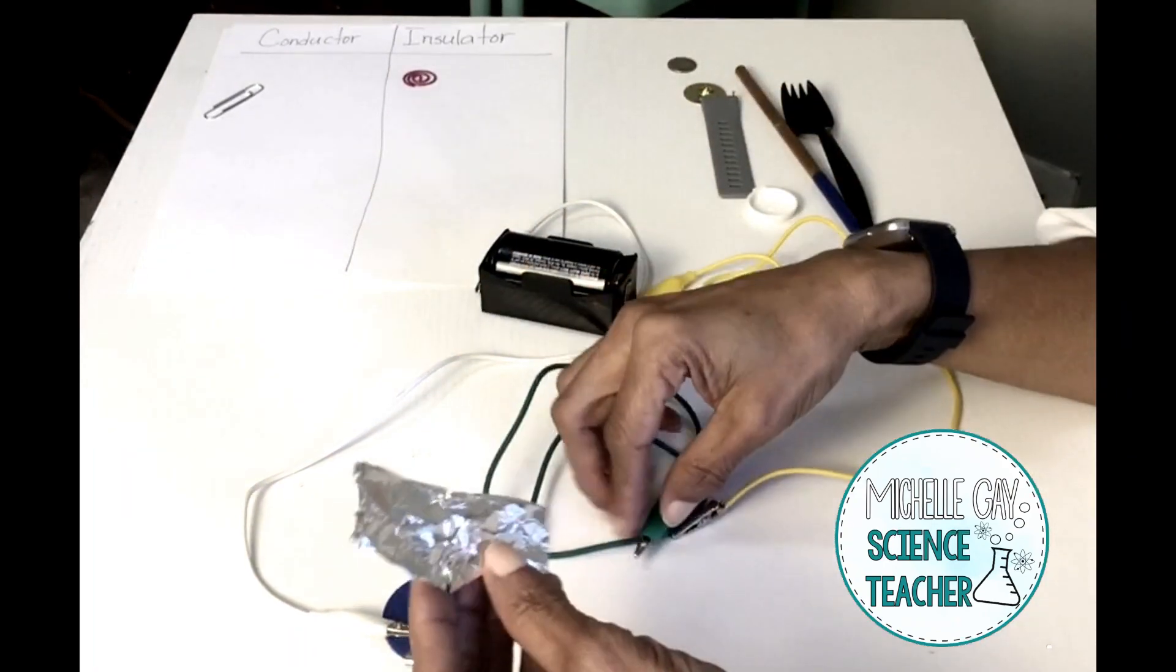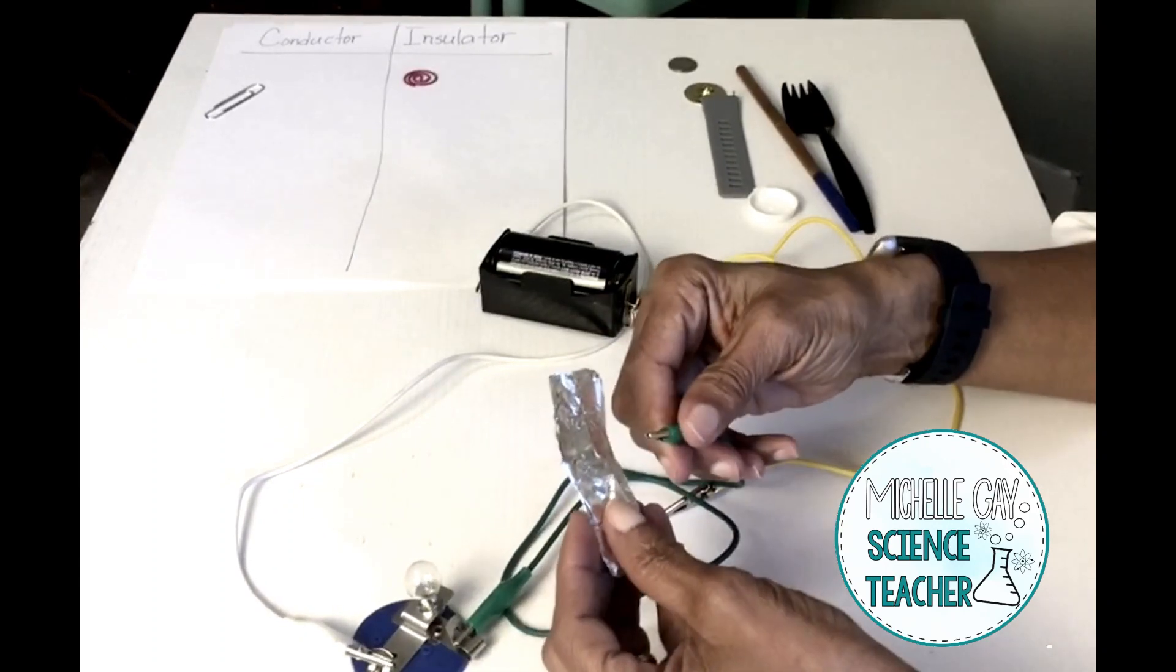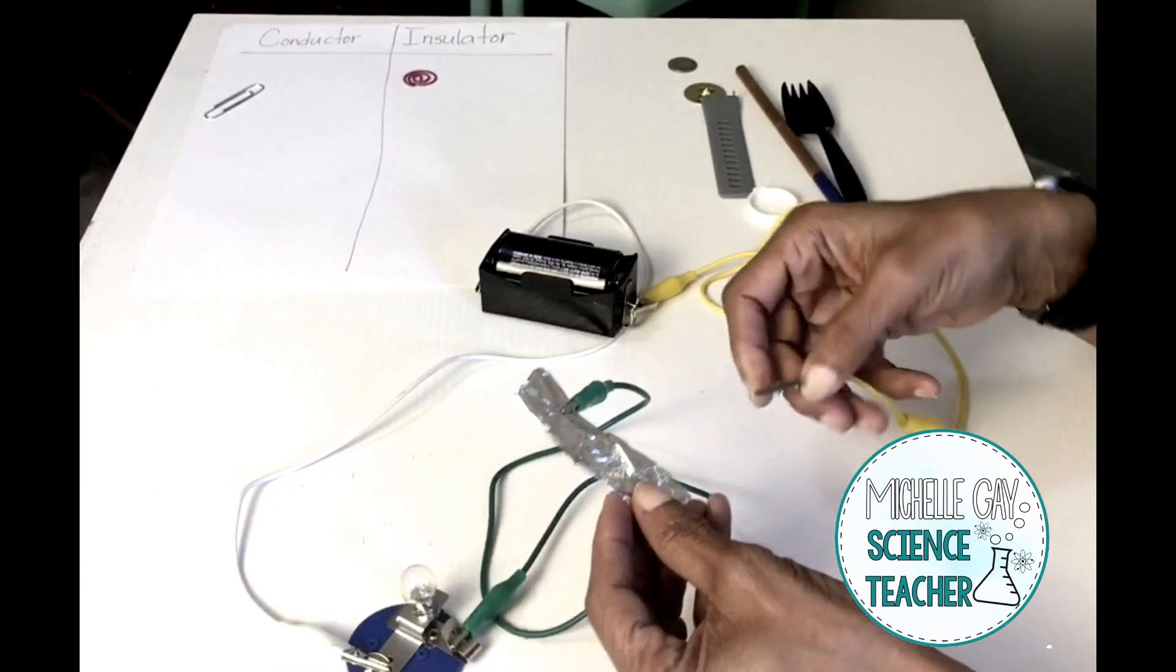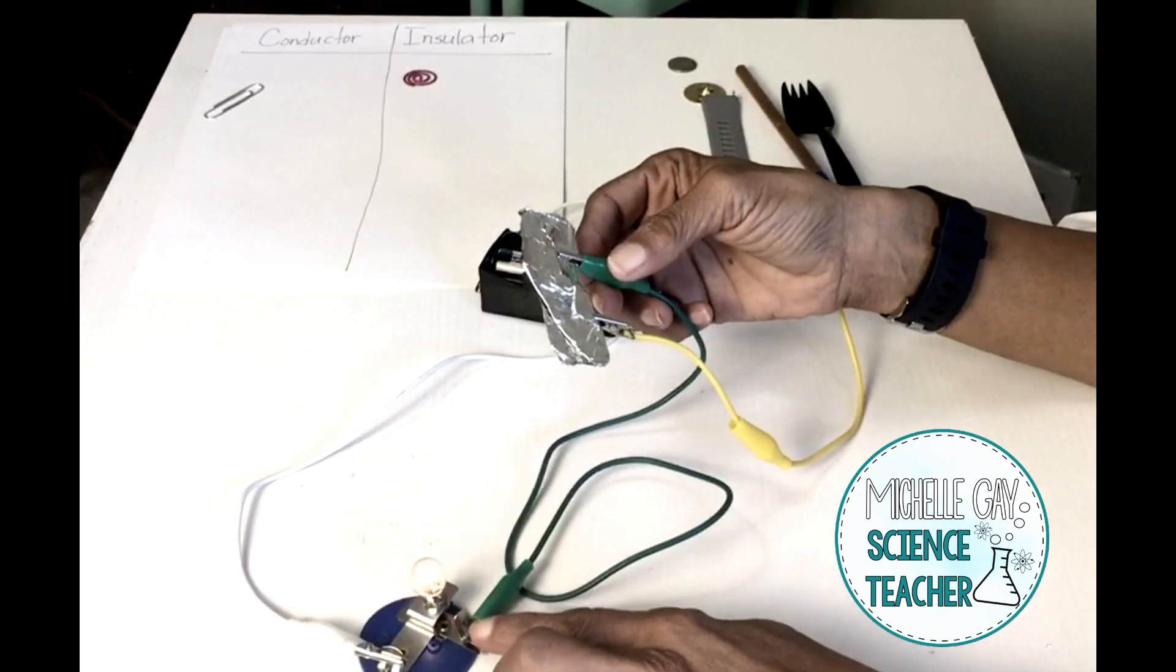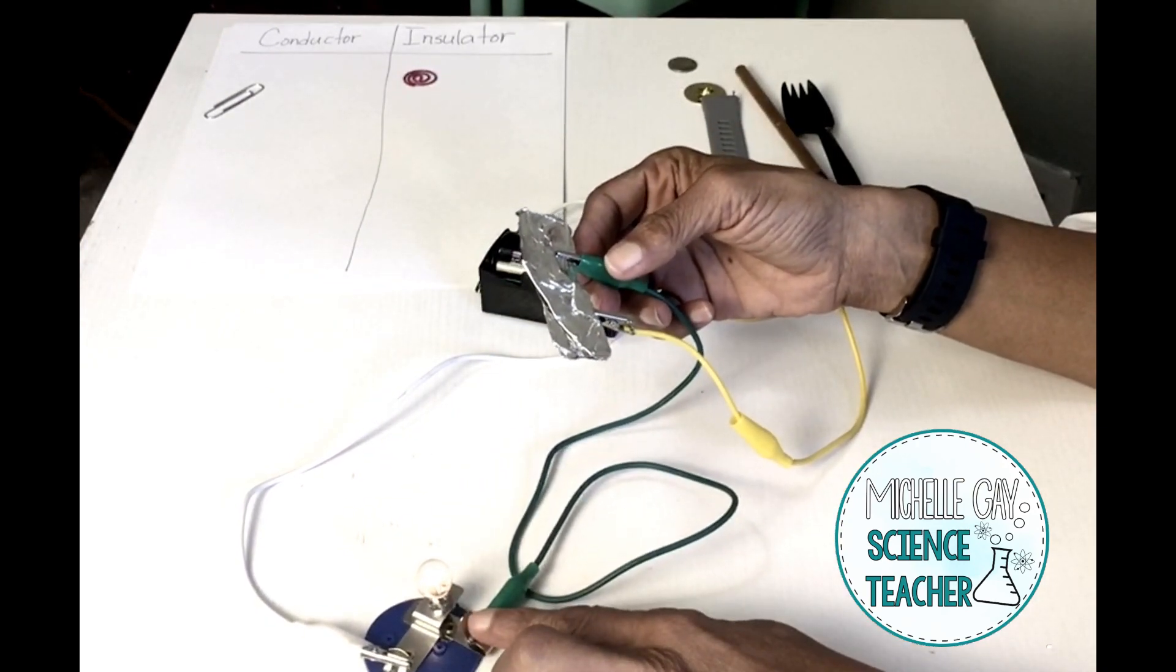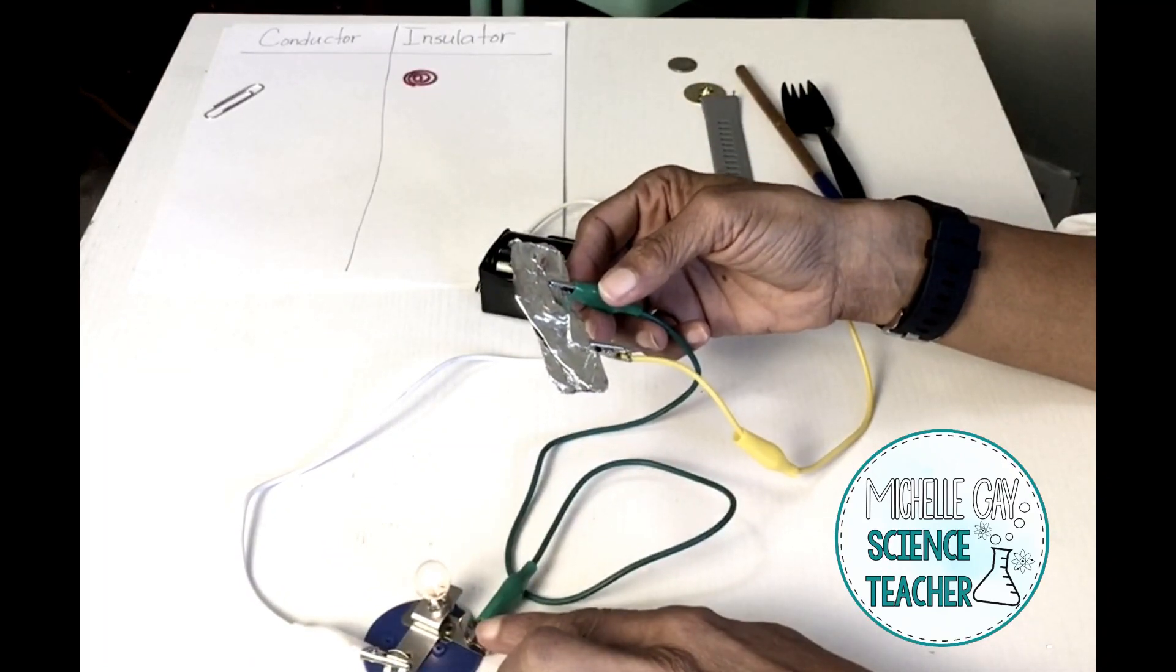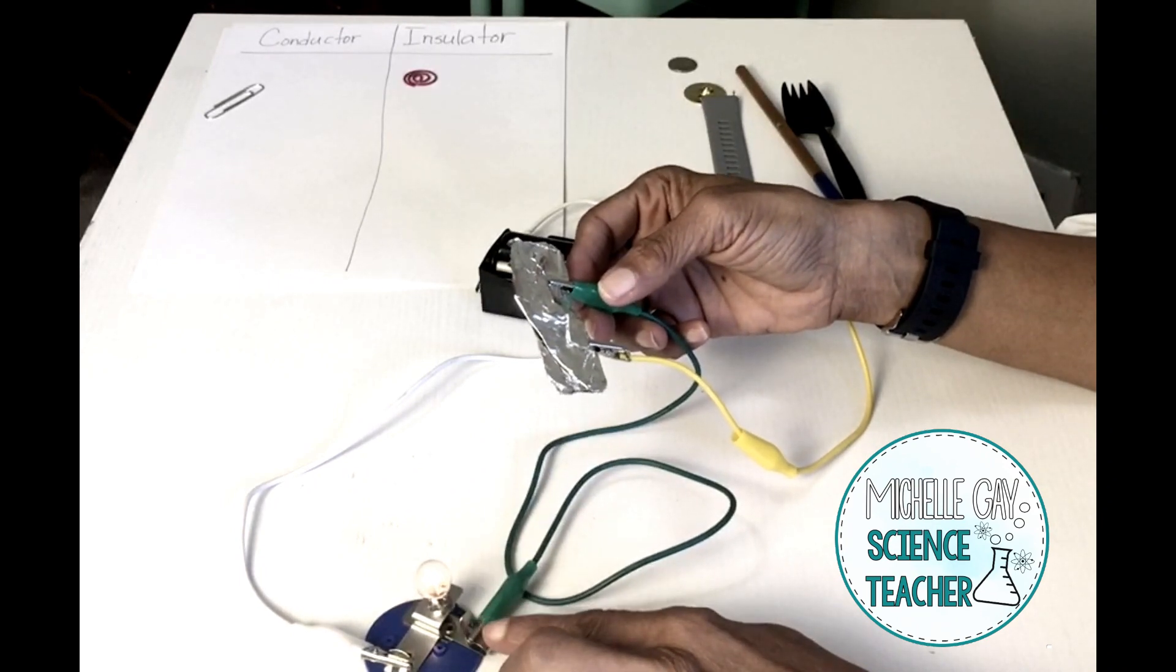Let's test out the fork. Do you think it's a conductor or an insulator? If you said a conductor, then you are correct again. This is a conductor because the light bulb has come on and our circuit is complete.